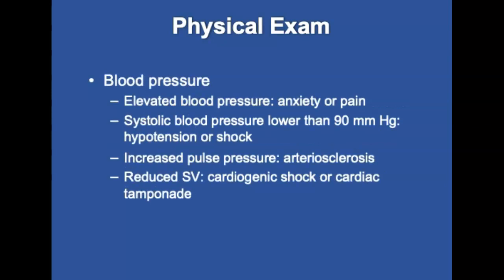Regarding blood pressure findings in cardiac patients: in older patients, systolic blood pressure greater than 140 mmHg is a more important risk factor for CVD than diastolic pressure. A systolic pressure of 120 to 139 mmHg or a diastolic pressure of 80 to 89 indicates pre-hypertension. In emergencies, elevated blood pressure may result from anxiety or pain. Systolic pressure lower than 90 mmHg may indicate hypotension or shock. Increased pulse pressure may indicate arteriosclerosis, and reduced stroke volume may be a sign of cardiogenic shock or cardiac tamponade. If possible, obtain and compare blood pressures in both arms.